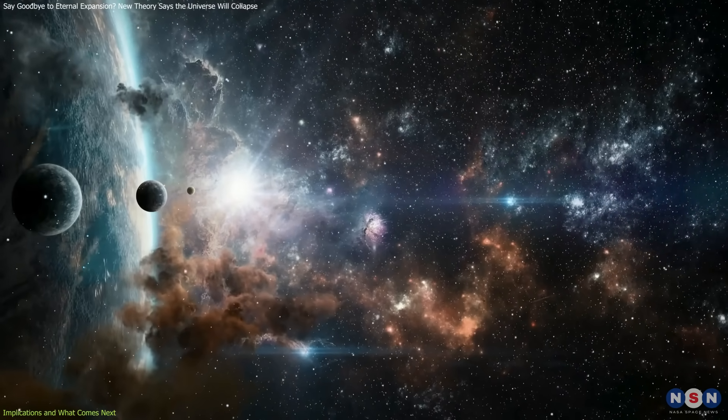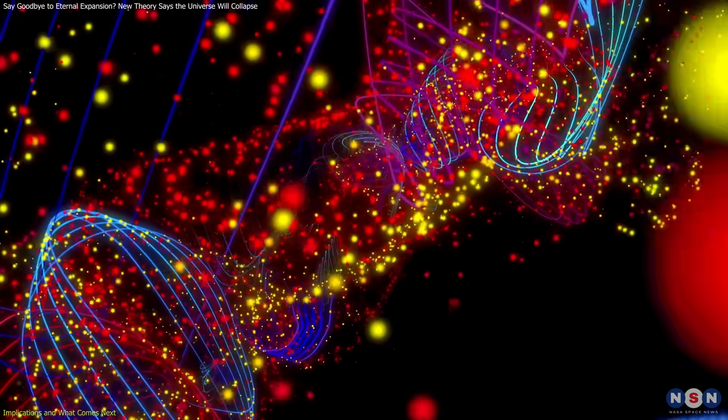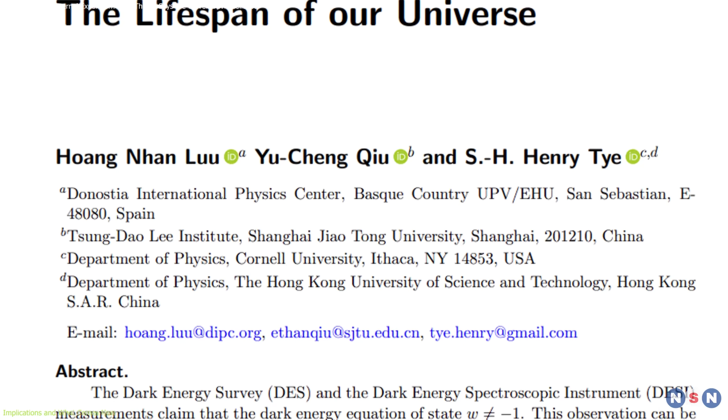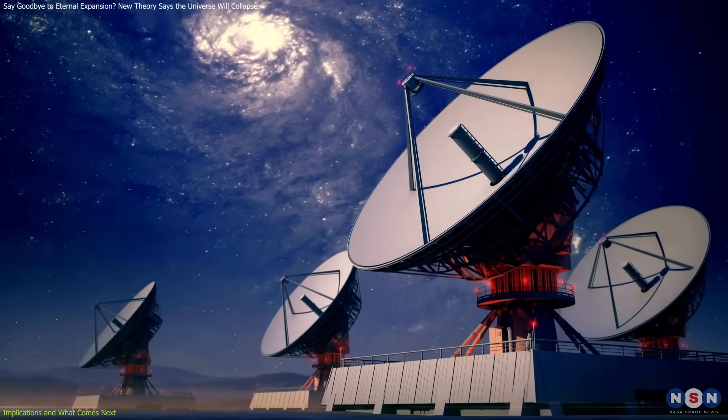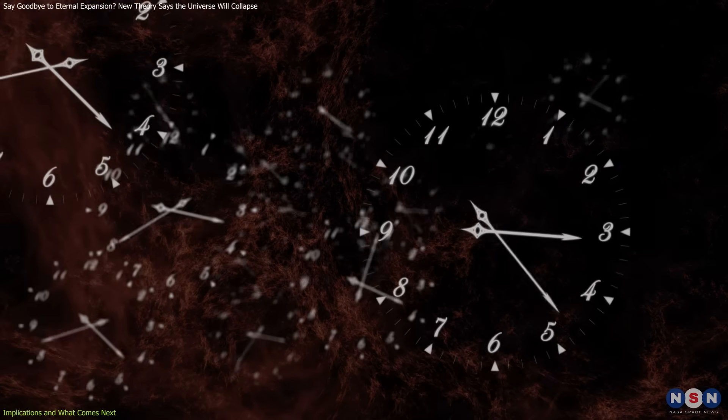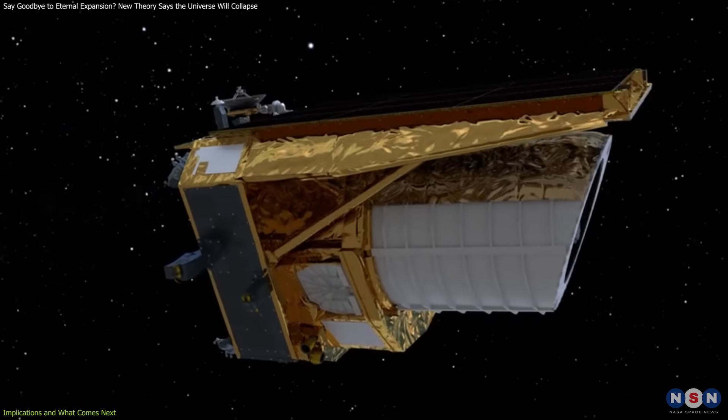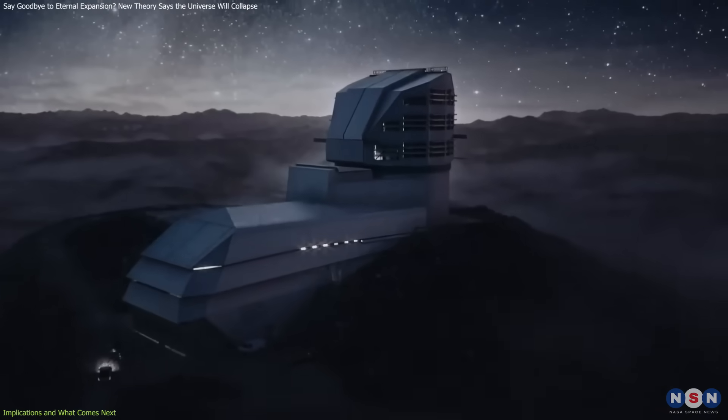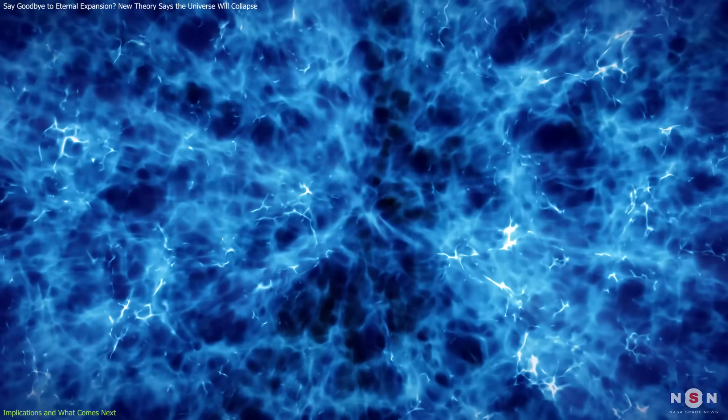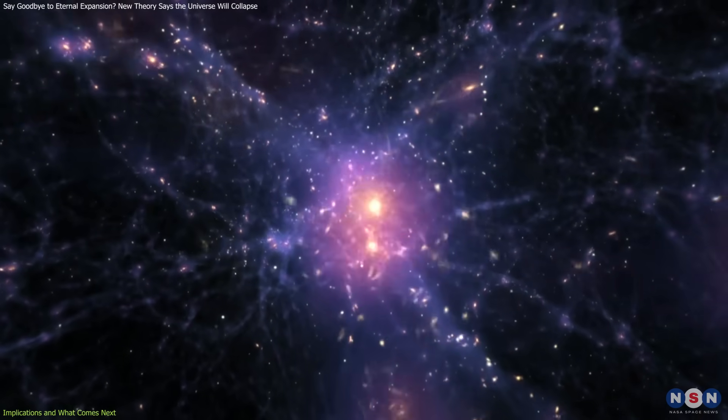If correct, it would have implications not just for cosmology, but for high-energy physics, quantum field theory, and the nature of spacetime itself. One key value of this research is that it frames a future that can be studied through observation. We don't have to wait 20 billion years to learn if it's true. Upcoming missions, like ESA's Euclid Telescope and the Vera Rubin Observatory, will collect far more detailed data on dark energy, galaxy evolution, and cosmic structure.